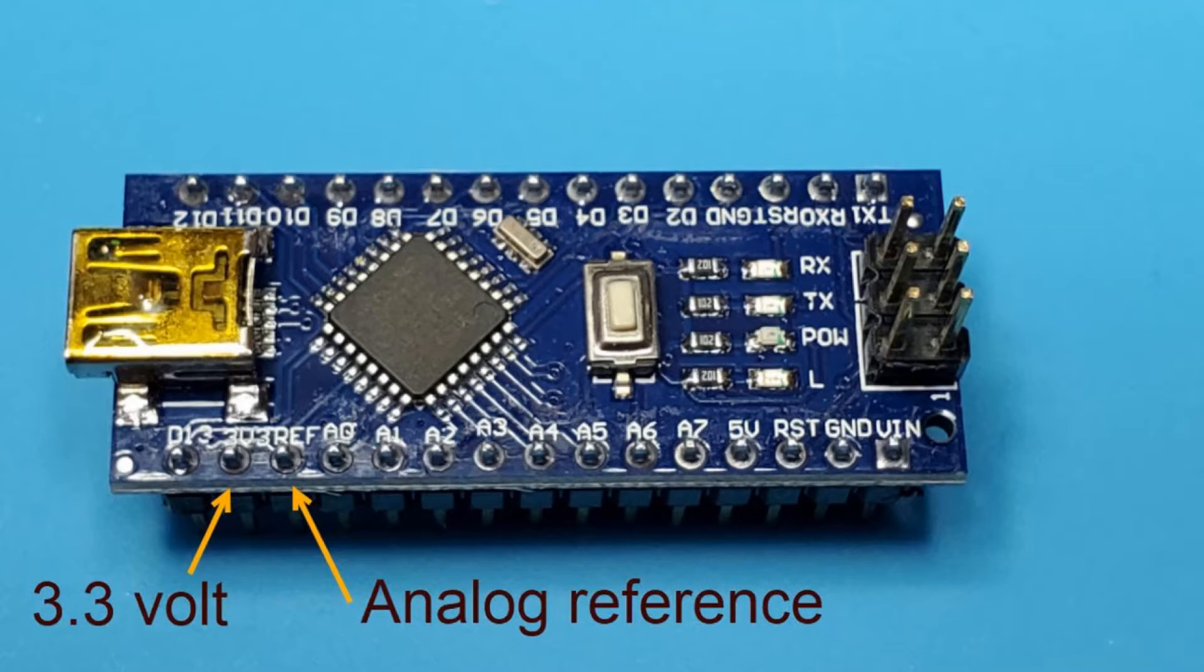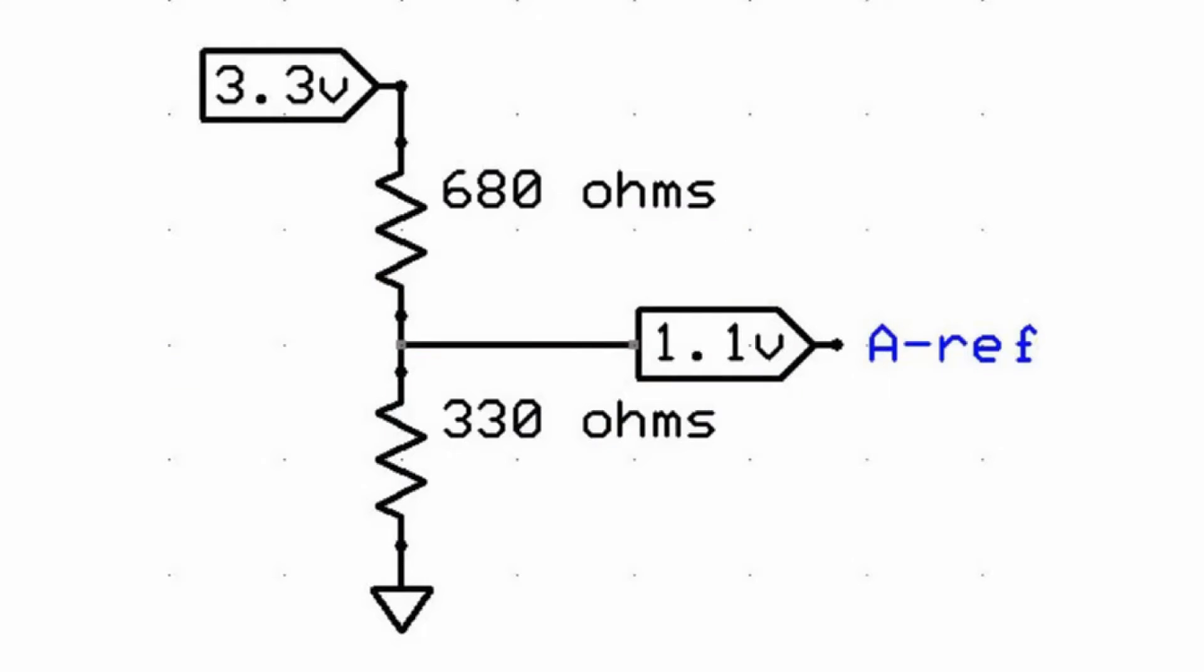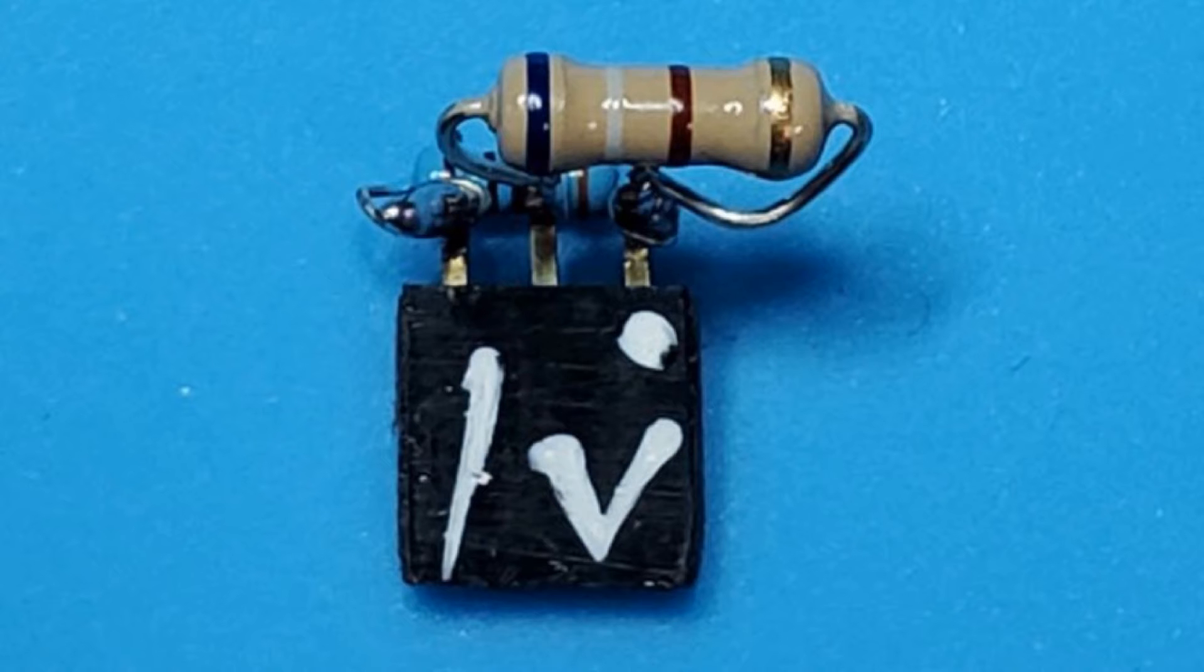For example, if the Arduino's 3.3 volt pin is connected to AREF, then the digital value 1023 corresponds to 3.3 volts, not 5 volts. The analog reference can be made even lower, which facilitates the sensitivity of voltage measurement.